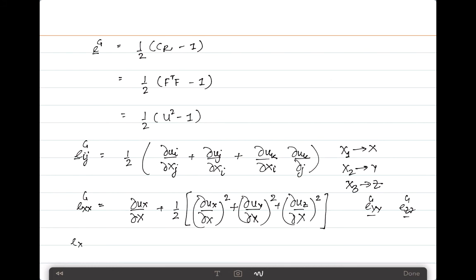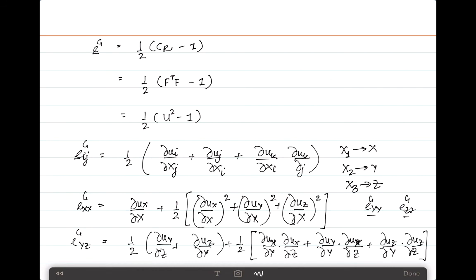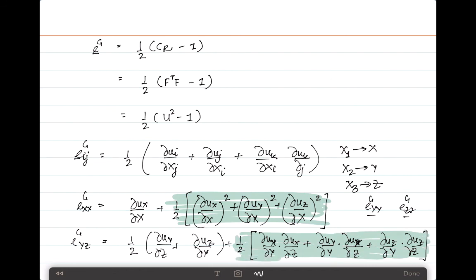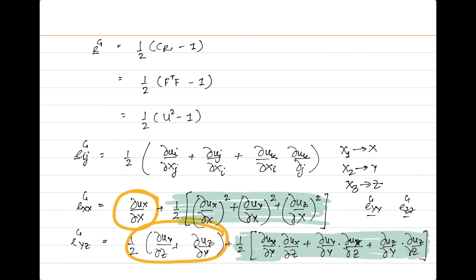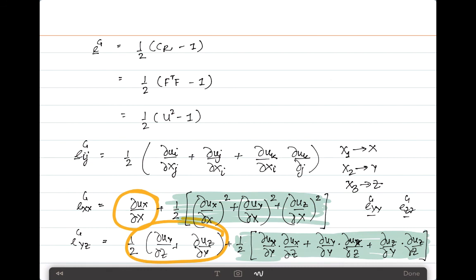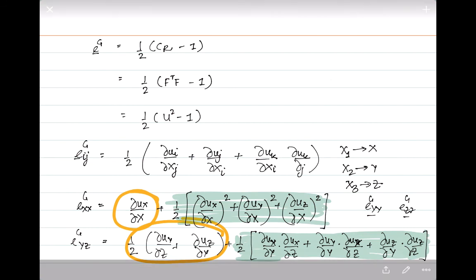There are also mixed components, such as Eyz, given as half of the corresponding cross-derivatives and so on. Looking carefully, the nonlinear portion is contained in the bracket with the square (second-order) terms. If you remove these nonlinear terms, you are left with the linear definition of strains used in linear elastic problems. This is where the nonlinearity comes in, and that is why we need to define the Green-Lagrange strain tensor with respect to the deformation gradient and the stretch, to capture changes under nonlinear conditions.